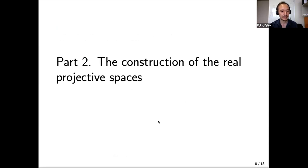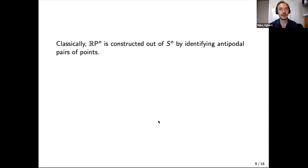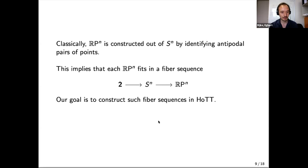The last part is the construction of the real projective spaces. Let's recall the classical construction: RPN is defined out of the N-sphere by identifying antipodal pairs of points. You have a sphere like the Earth, identify the two antipodal points, and that's exactly how RPN is defined. This means we have a quotient map from SN to RPN whose fibers are the Booleans. In homotopical language, this means we have a fiber sequence like that. So we want to construct some spaces that fit in a fiber sequence of this form.